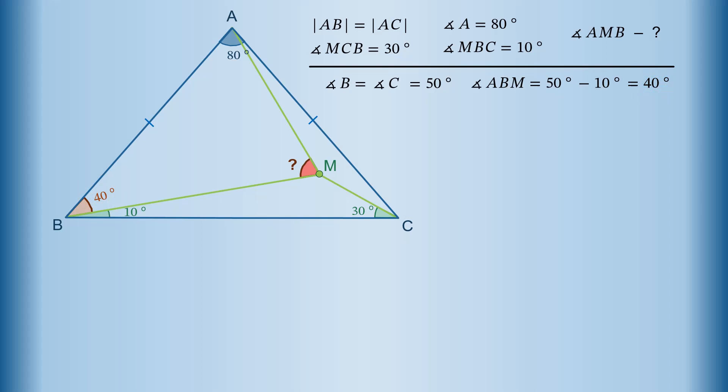Next, we draw the bisector of the apex angle meeting base BC at point D. The bisector splits the apex angle into two angles of 40 degrees each. In particular, angle BAD equals 40 degrees. AD is also altitude and median of the triangle ABC. Therefore, AD is perpendicular to BC, and segments BD and CD have equal lengths.